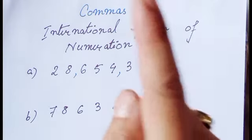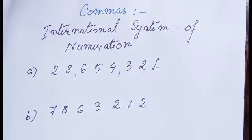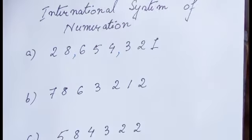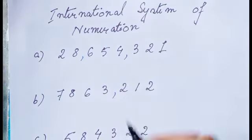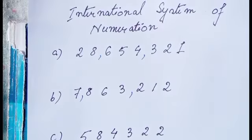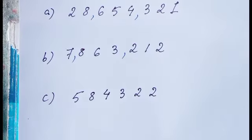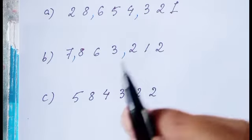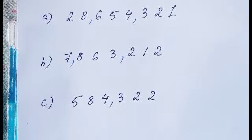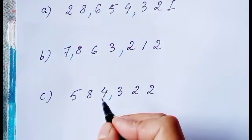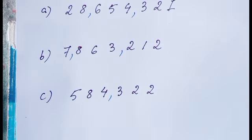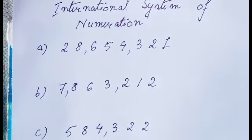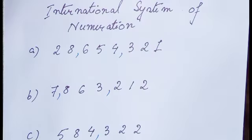Remember: in the international system, every comma — first, second, or third — comes after every three digits, and we start counting from the right side. Applying this to the other examples: the first comma after three digits, second comma also after three digits. For the last number, first comma after three digits, second comma also after three digits, and no third comma because we don't have enough digits.